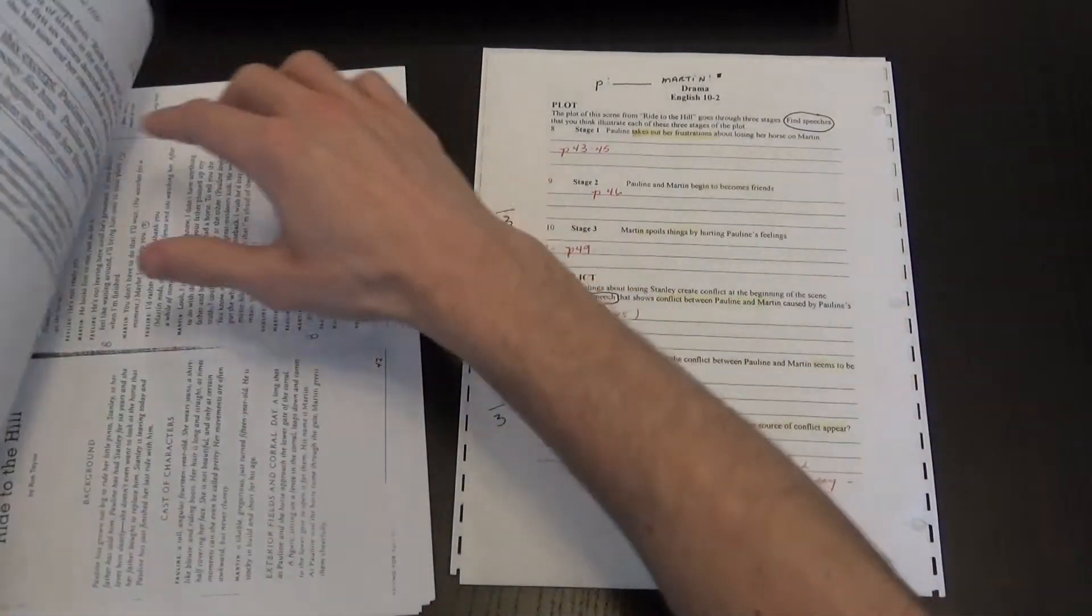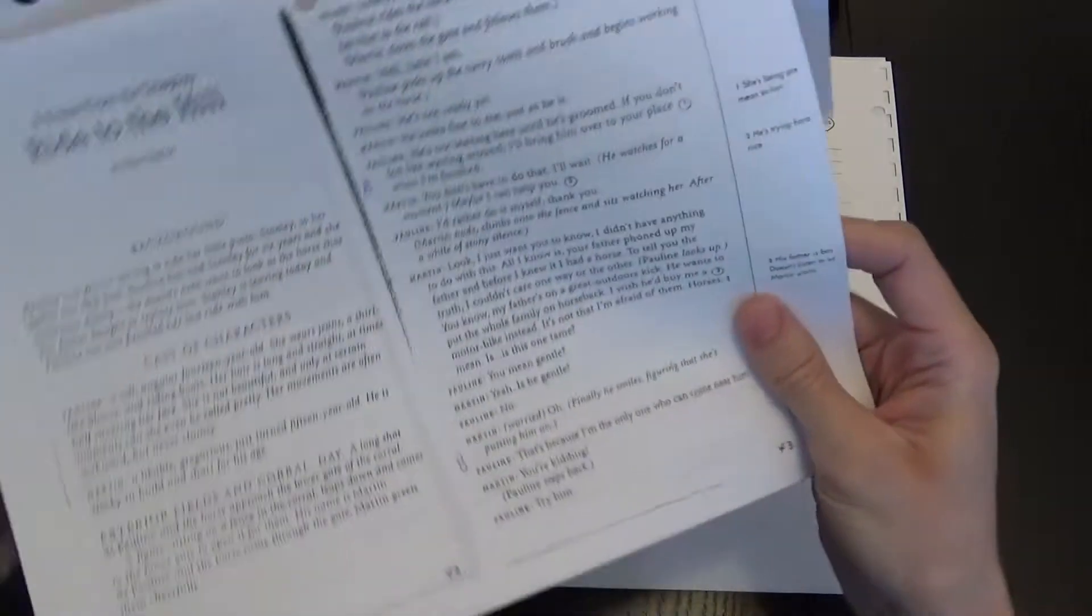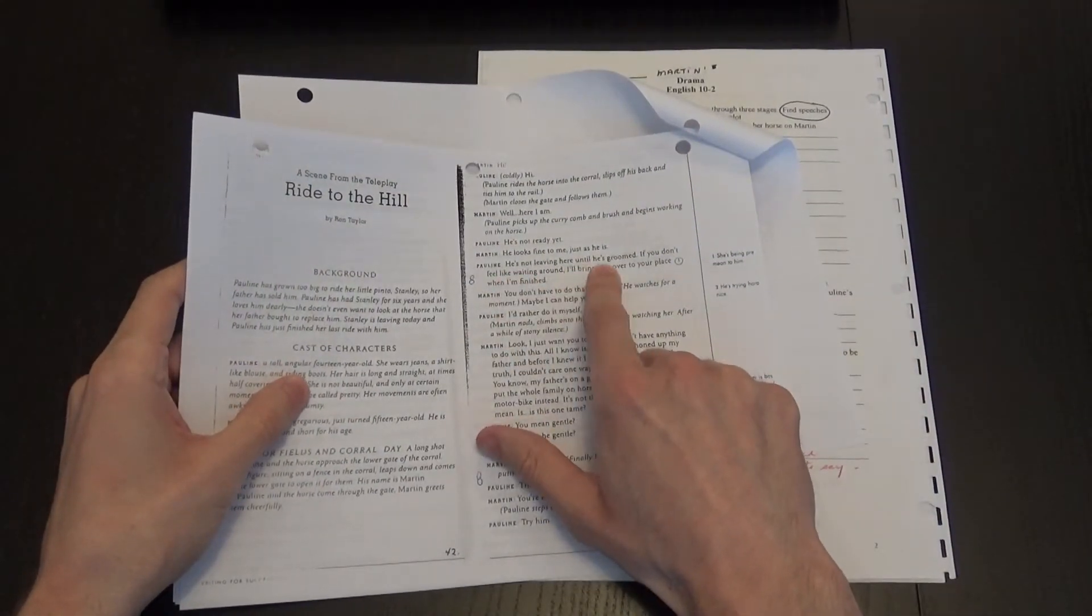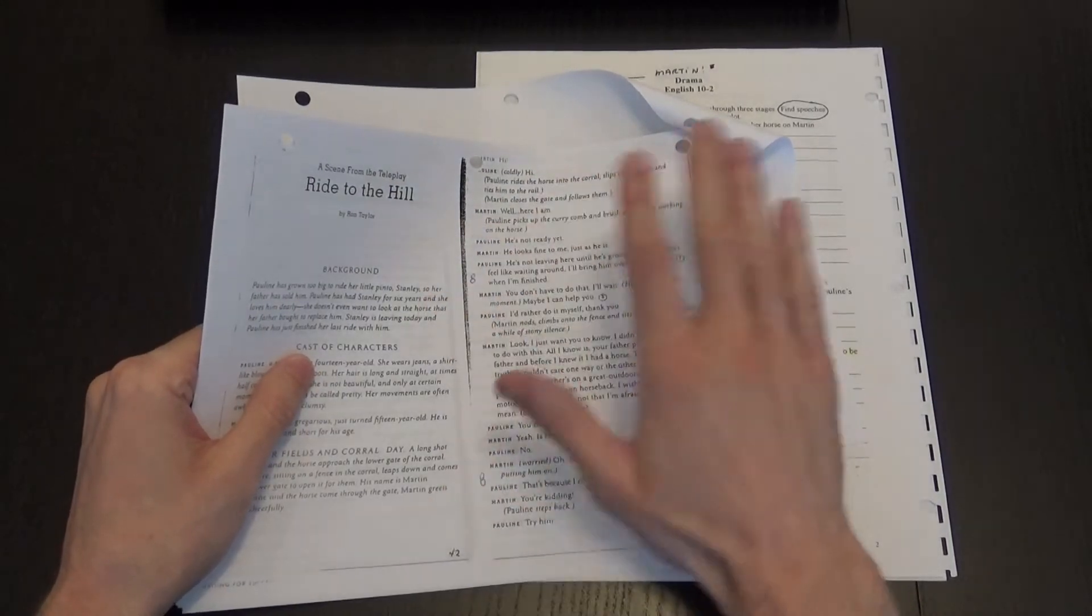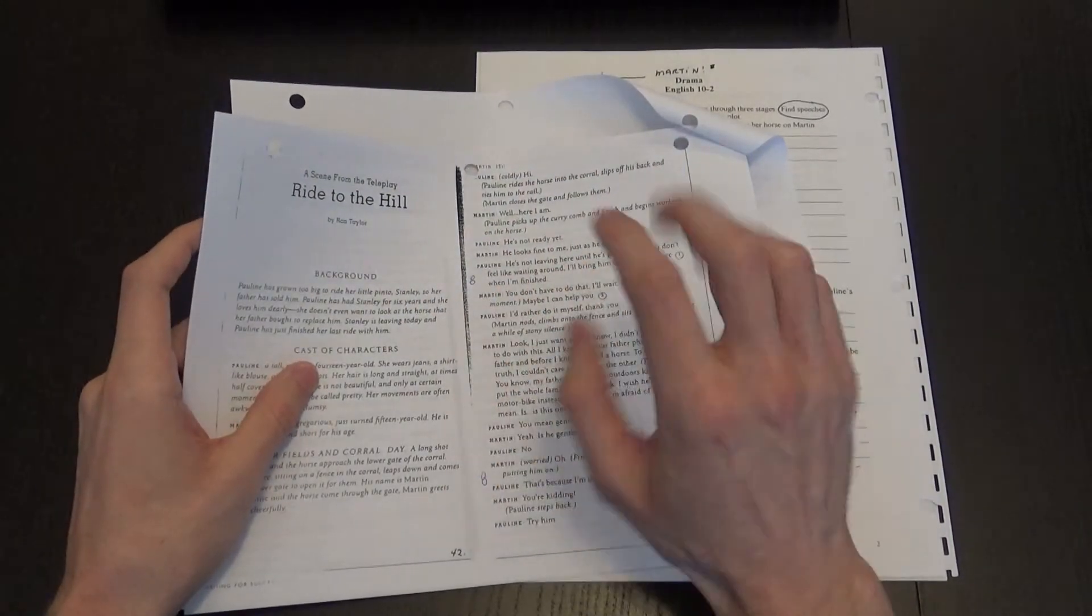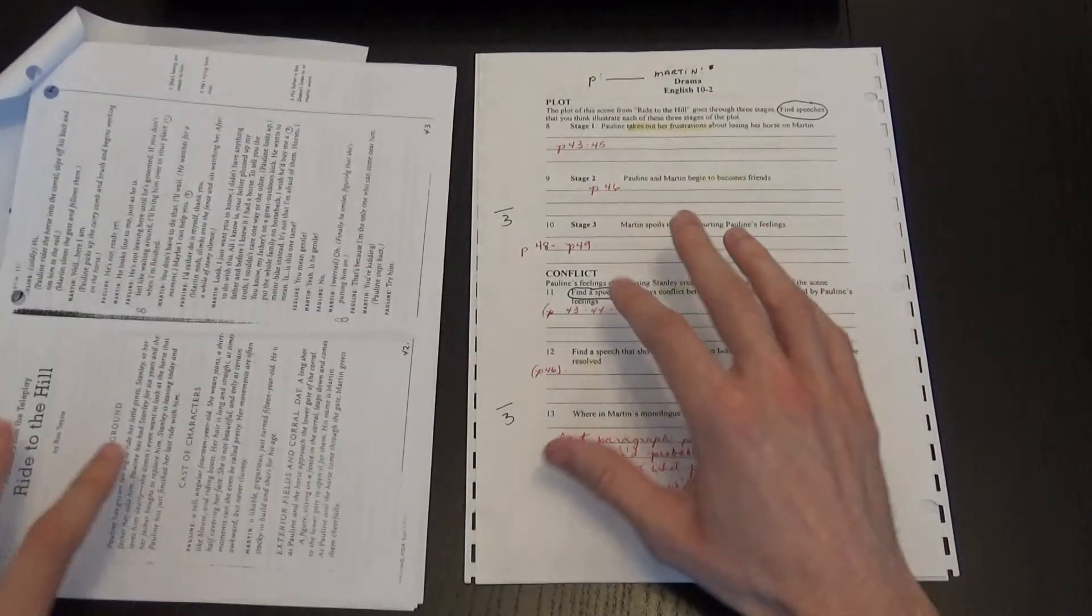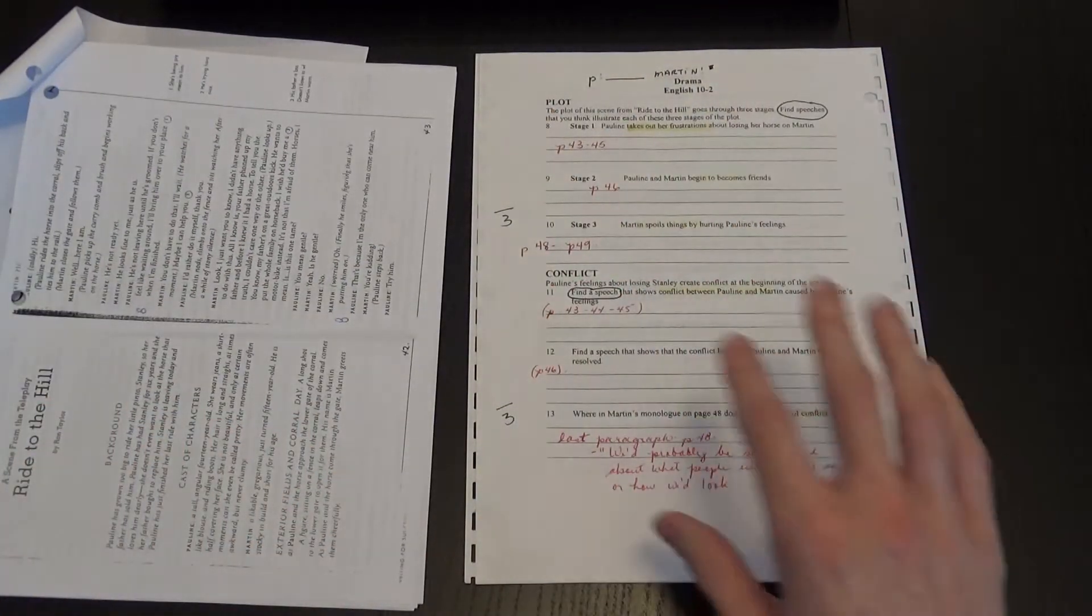So if I give you an example, we have one here. 'He's not leaving here until he's groomed.' So she's upset. She just wants to do her thing. She doesn't want to talk or speak to Martin. So she's just putting Martin aside.